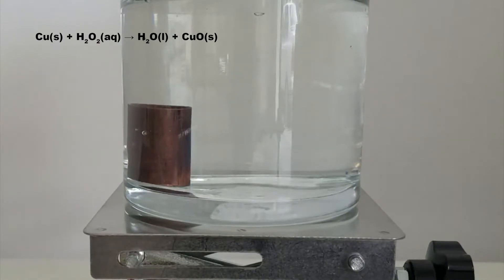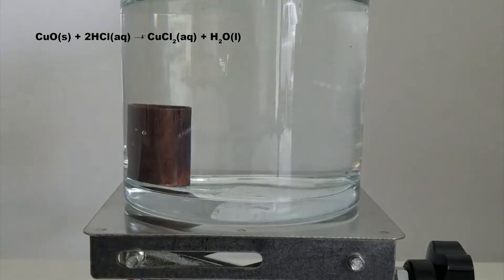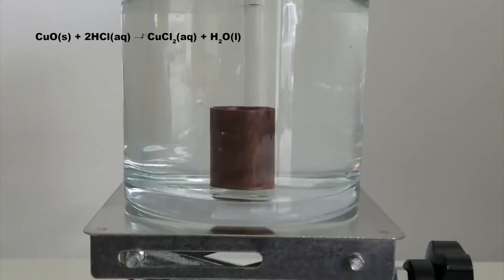I'm not sure how well the camera picked up on it, but if you look closely, you can see the solution turning light blue around the copper. This is the copper oxide reacting with the hydrochloric acid to form copper chloride, which has a blue-green color when dissolved.